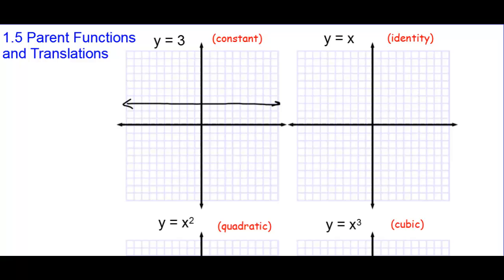Then we have the identity equation, y equals x, and that is a line with a y-intercept of 0 and a slope of 1.